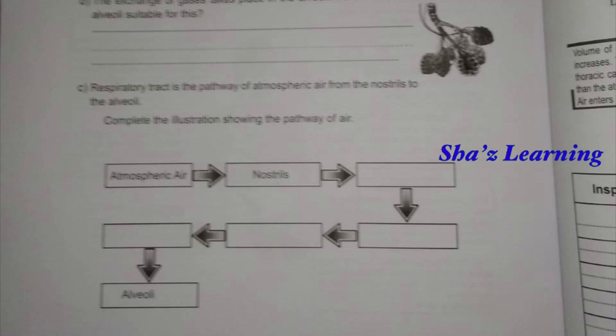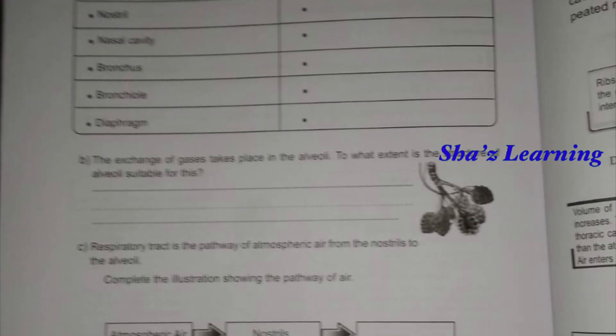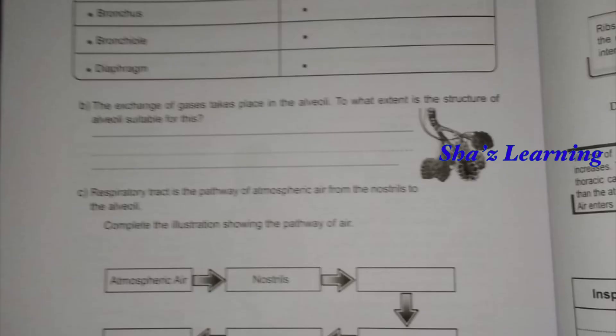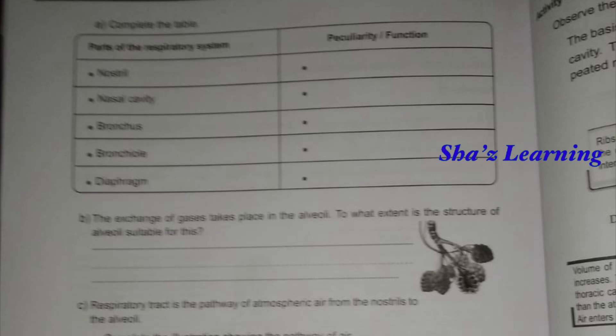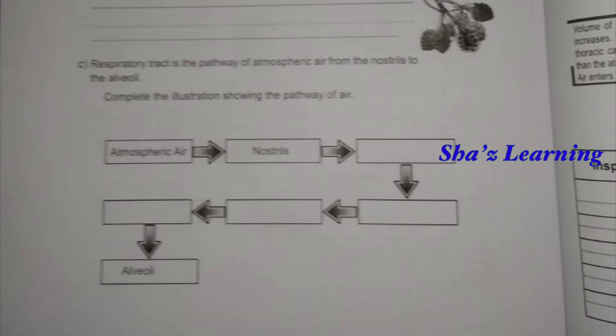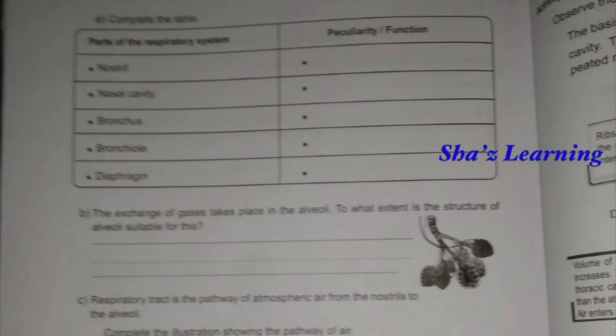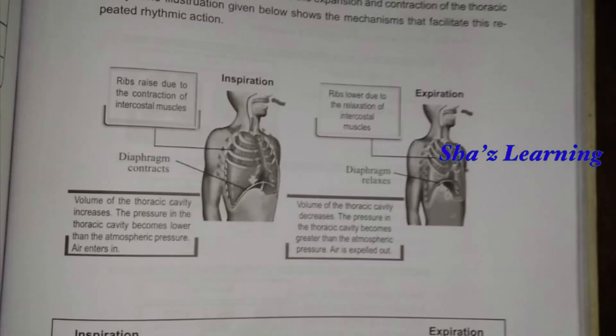This is the flow chart. Air from the atmosphere enters through the nostrils into the nasal cavity, then proceeds to the bronchus. Next, we will look at inspiration and expiration.